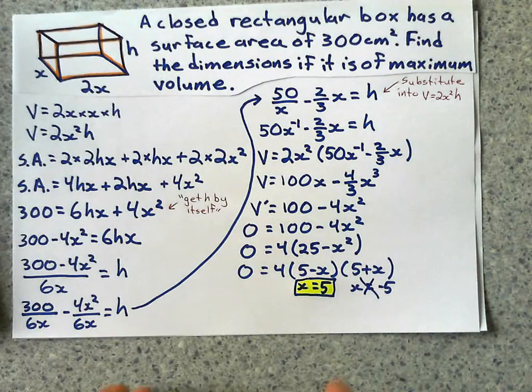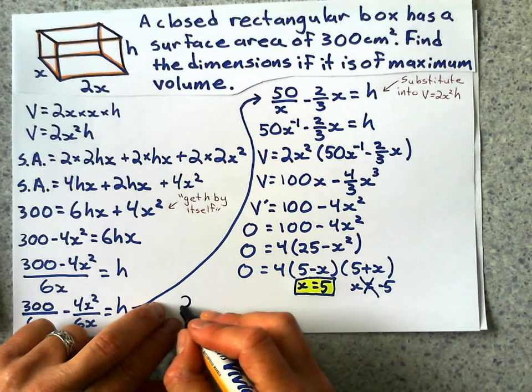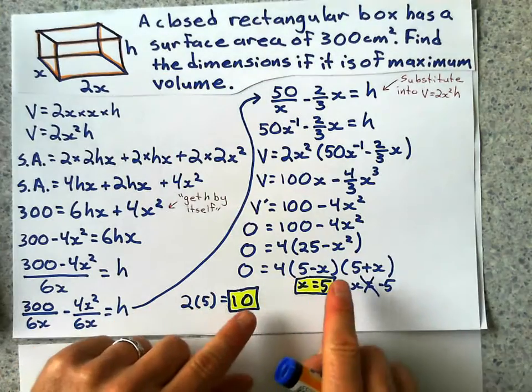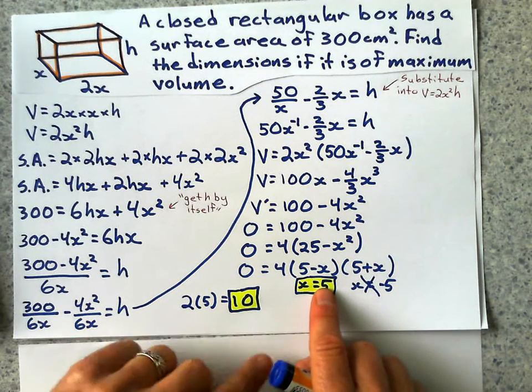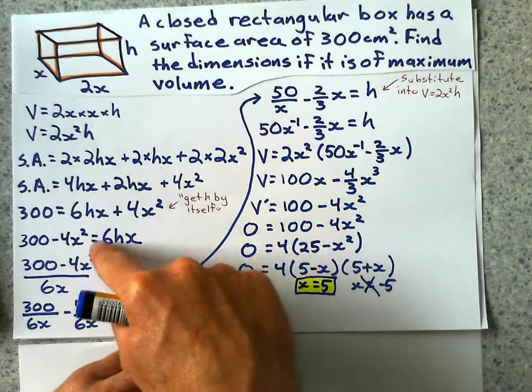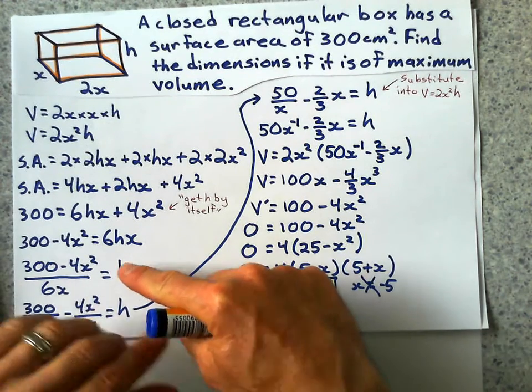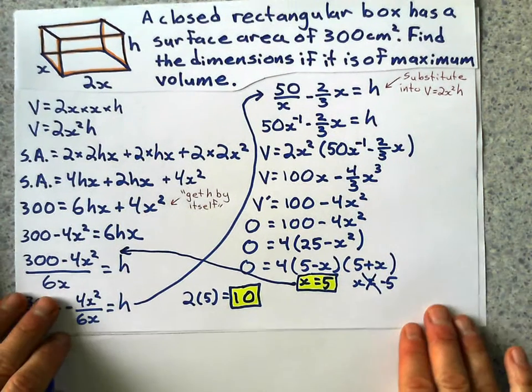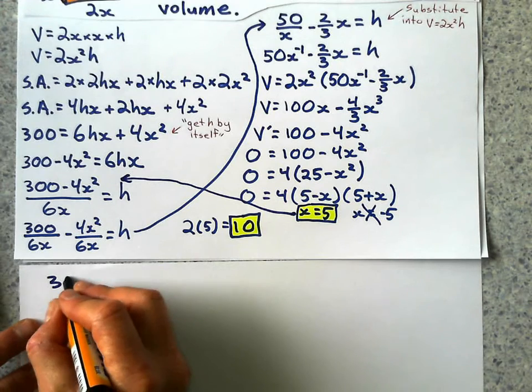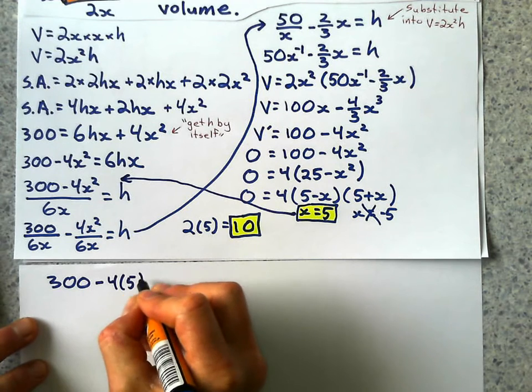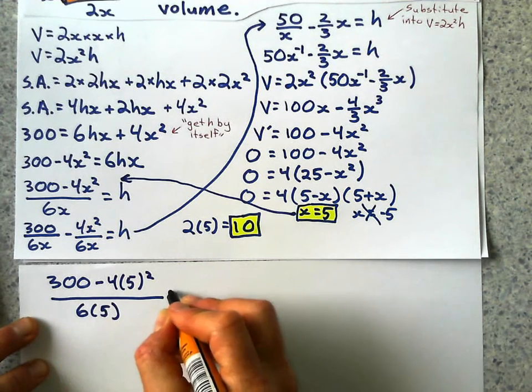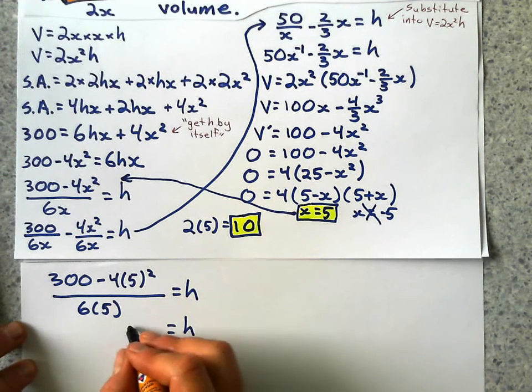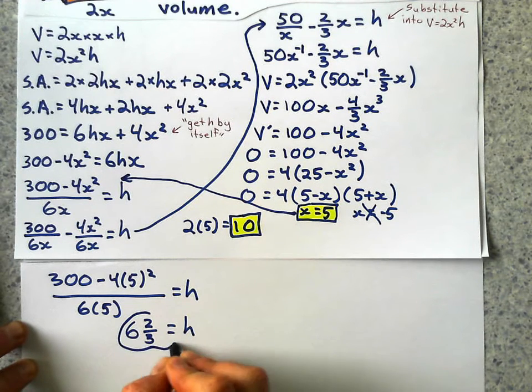Now, I want three things in this problem. I want all the dimensions and the max volume. Well, I've got that dimension. Let's get the length. That's just going to be 2 times 5 equals 10. All right. Now, solving for h takes a little bit more work, a little bit more algebra. I've got this value of x. And I can substitute it into any formula to solve for h. It doesn't matter which one. Why don't I just use this one here? I'll take this 5 and I'll just put it into this equation to solve for h. So I go, 300 minus 4 times 5 squared divided by 6 times 5 is going to give me that value of h. And when I do the math there, I get 6.66667 on the calculator, which we will write as 6 and 2 thirds.